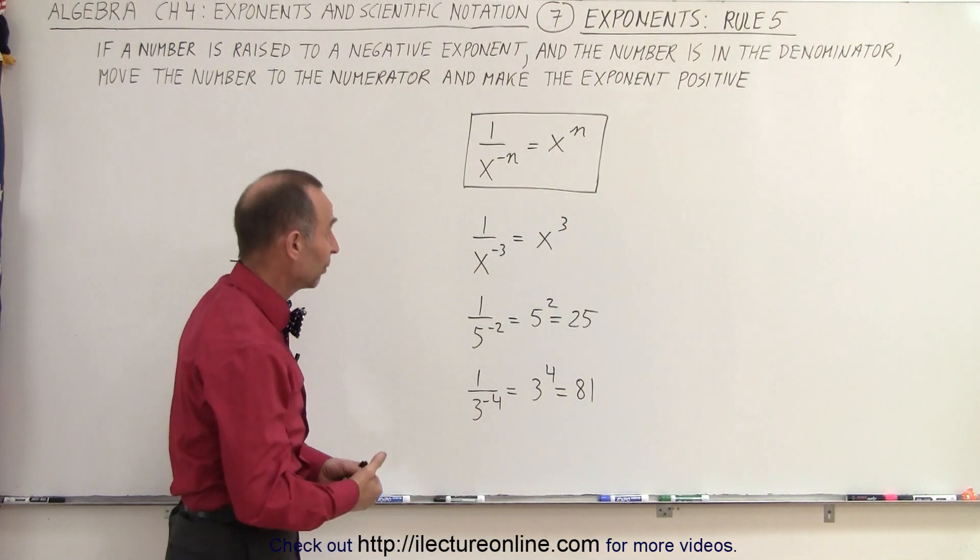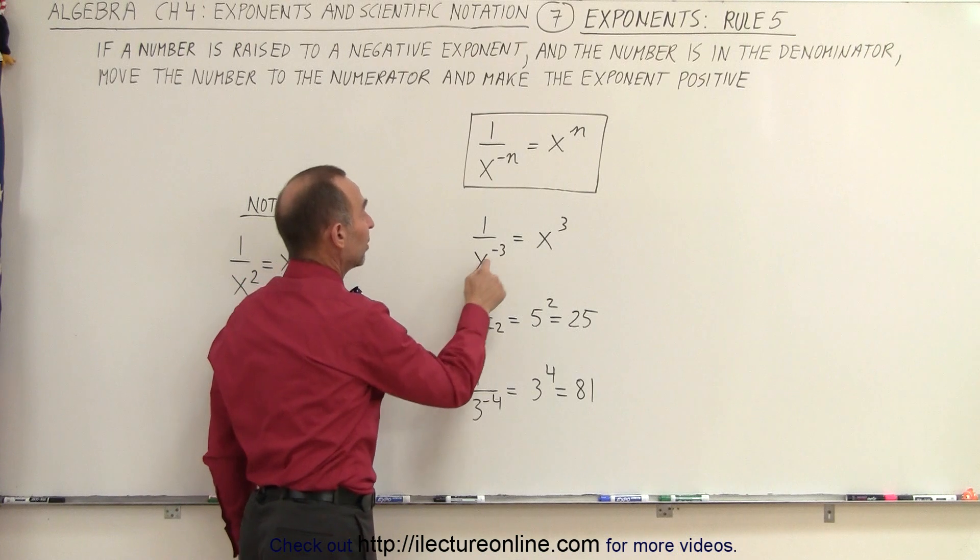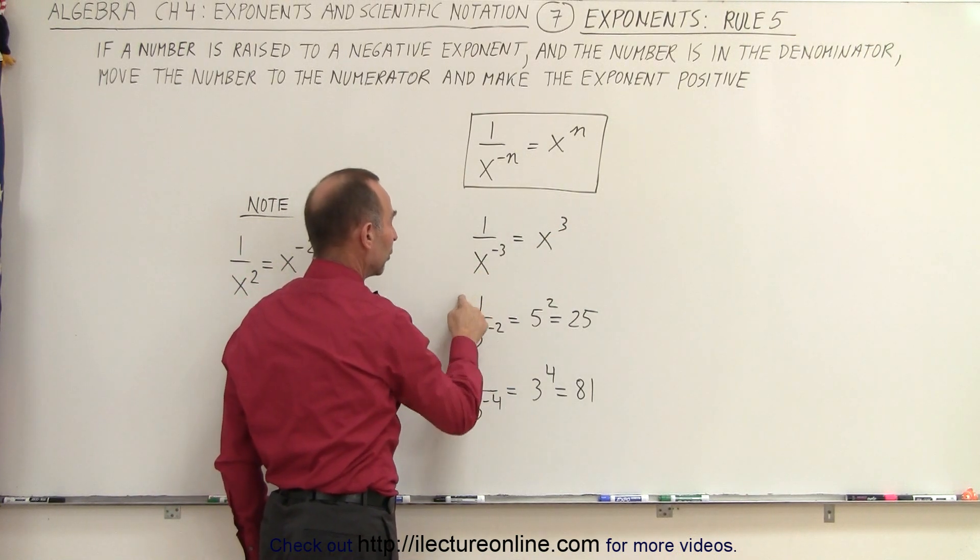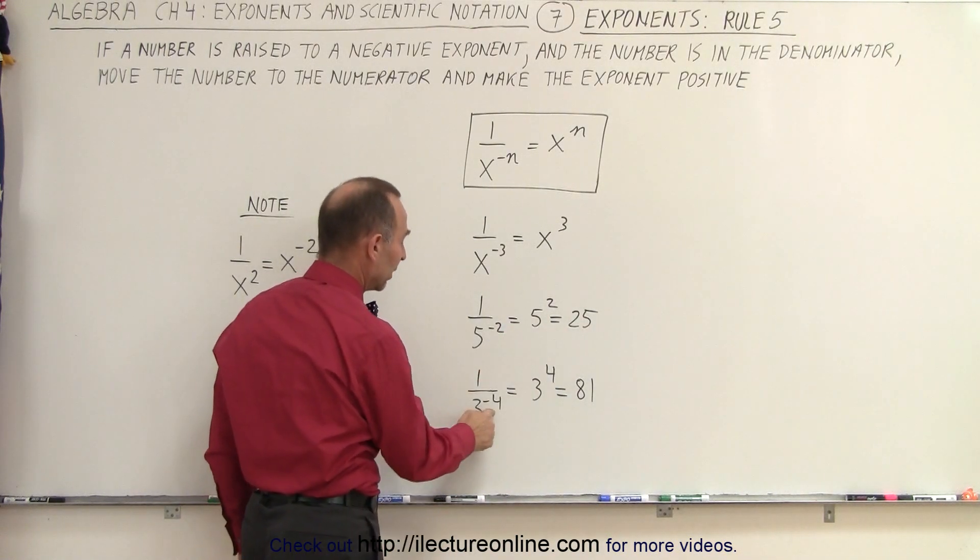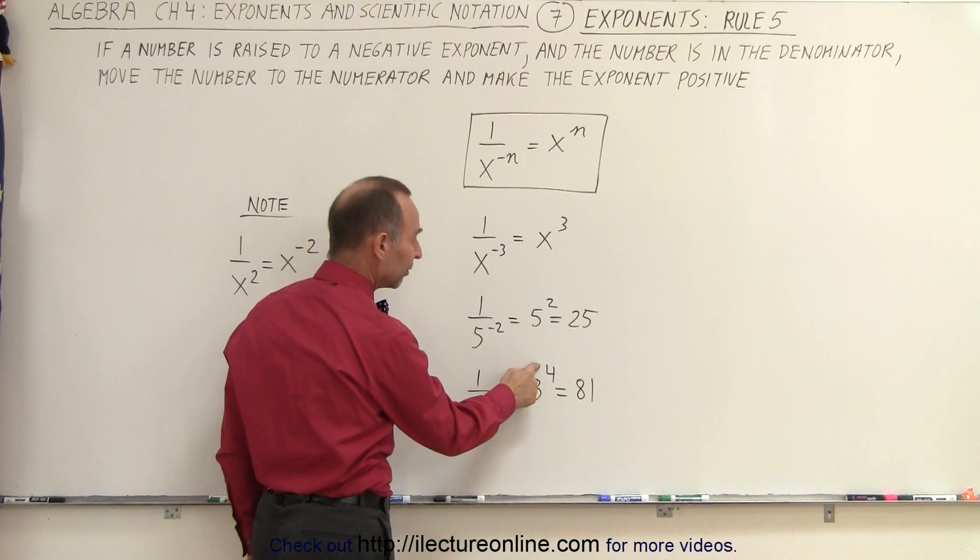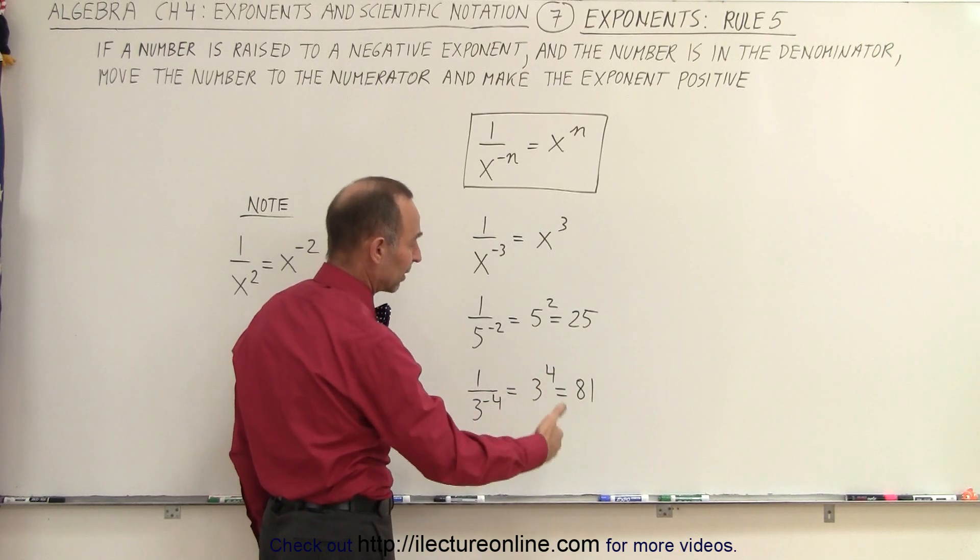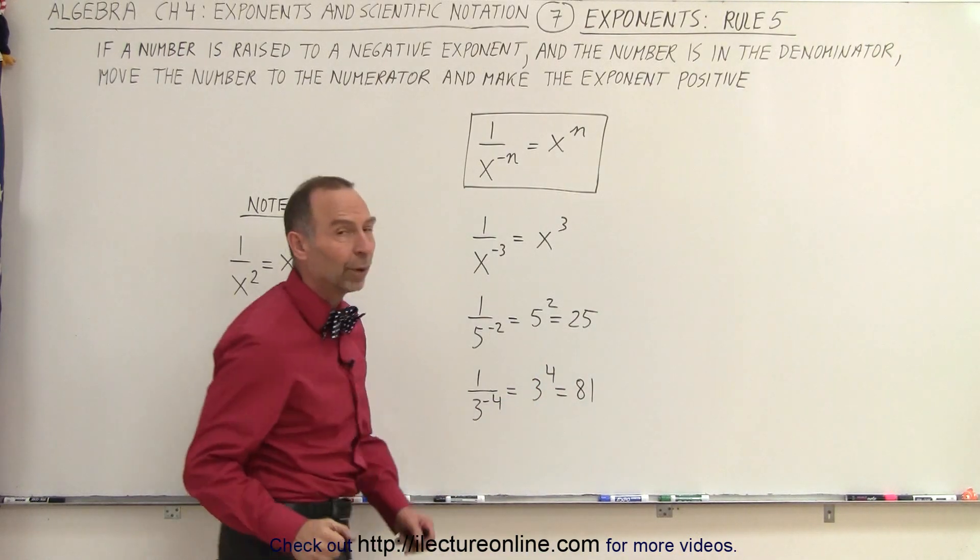A few simple examples. 1 over x to the negative 3 is equal to x to the third. 1 over 5 to the negative 2 is equal to 5 to the second power, which of course is 25. Or 1 over 3 to the negative 4 power is 3 to the positive 4 power, which is 3 times 3 times 3 times 3, which is 81.